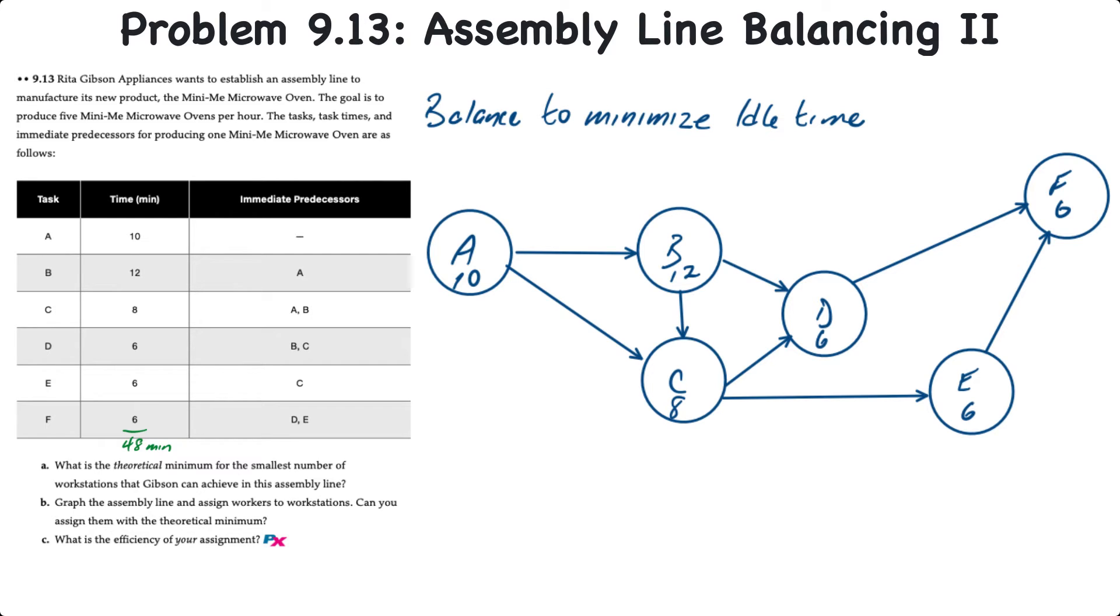Now one of the easiest things to do first is to look to see if there are any tasks that are equal to the cycle time, which means that they'll have to be assigned to a workstation on their own. As you can see, B here has a task time of 12 minutes, so that must be a workstation of its own.